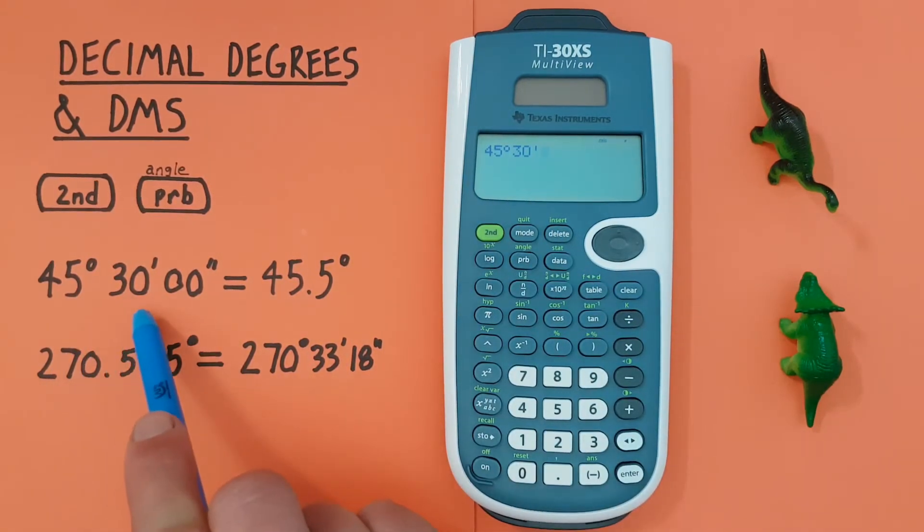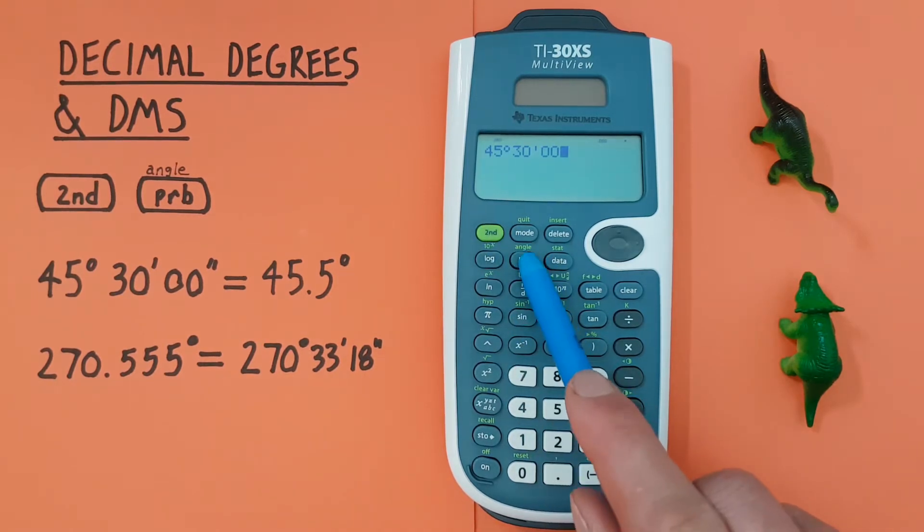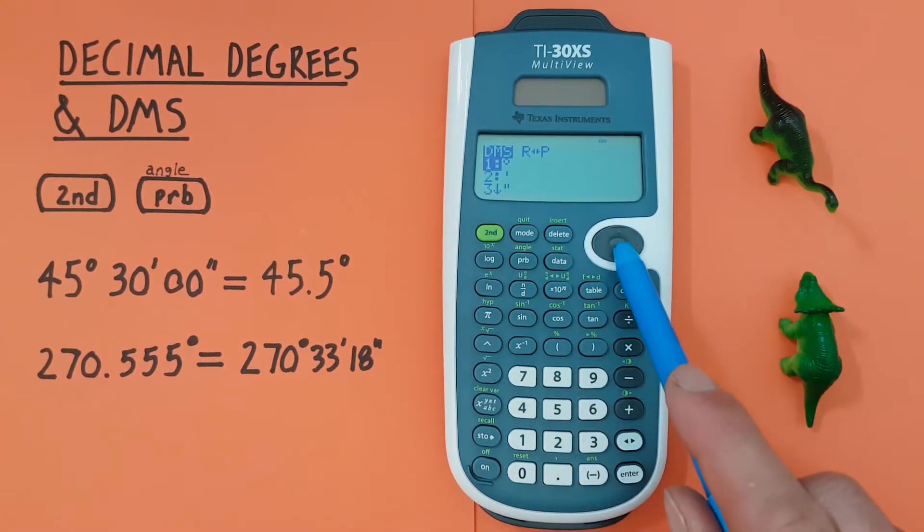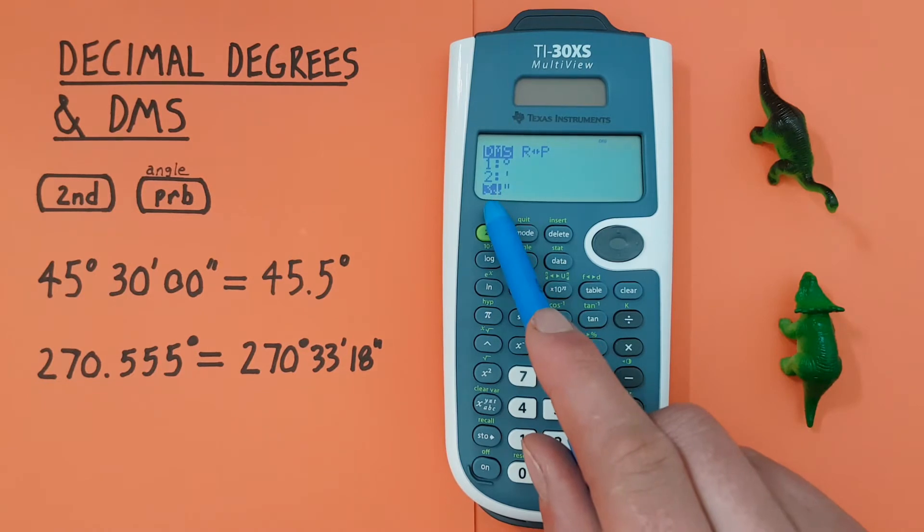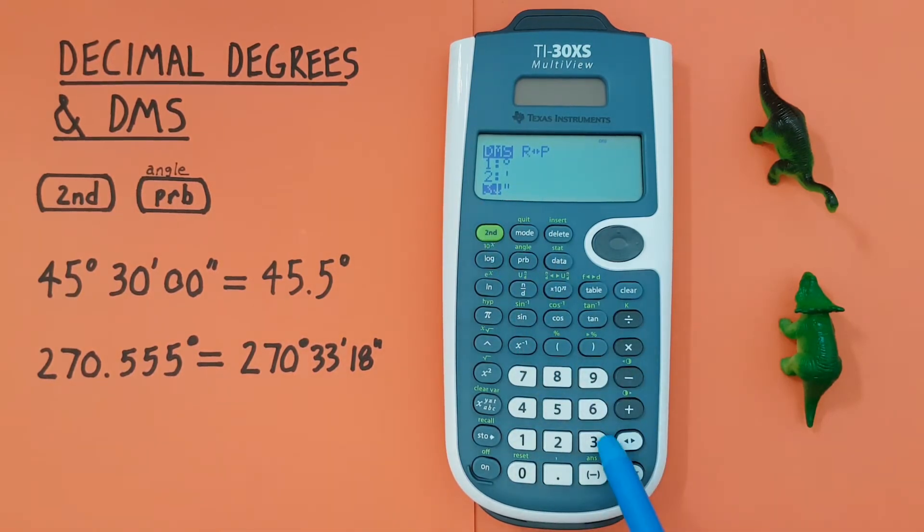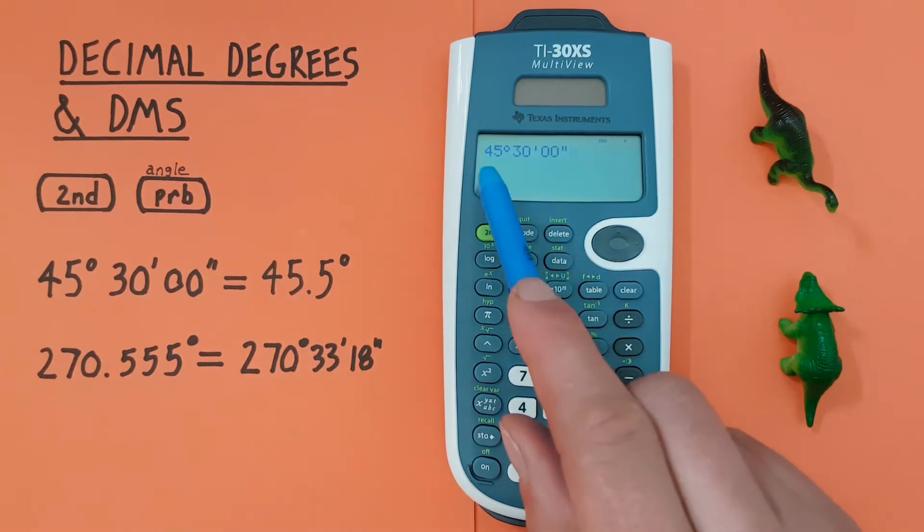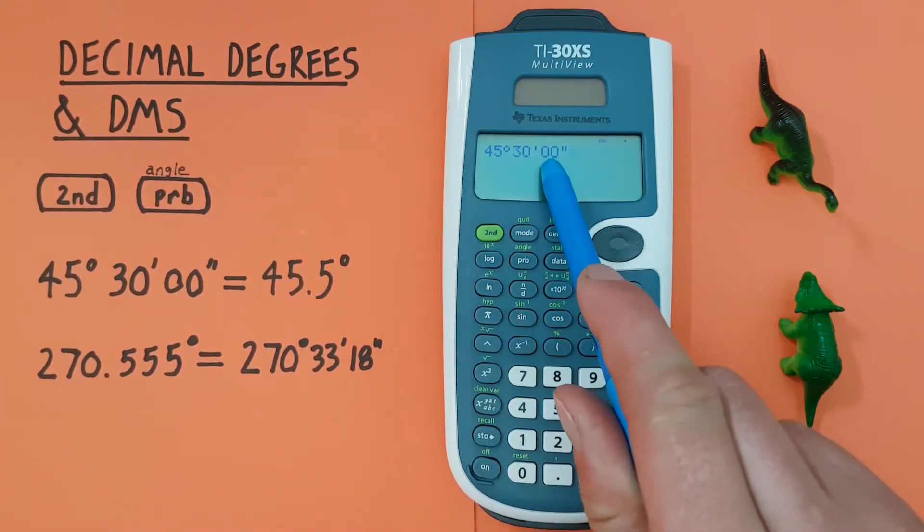Now since we don't have seconds in this example we could leave it here but we'll enter it just to show how you do. So we enter our seconds and then back to the menu and you can either scroll down and press enter or you can just press number three. So we'll just press three here and we see we now have 45 degrees, 30 minutes, zero seconds.